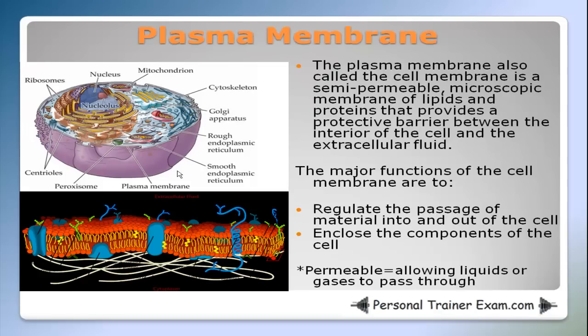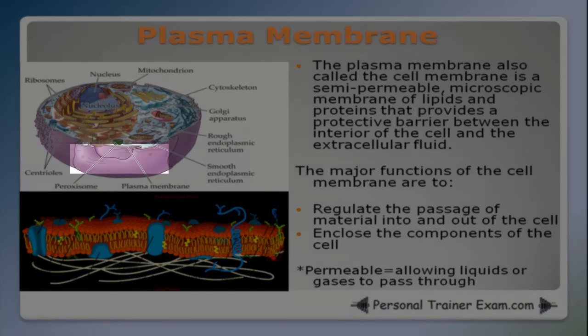A quick review of what the plasma membrane is. The plasma membrane, also called the cell membrane, is a semi-permeable microscopic membrane of lipids and proteins that provides a protective barrier between the interior of the cell and the extracellular fluid. The major functions of the cell membrane are to regulate the passage of material into and out of the cell, and to enclose the components of the cell. The plasma membrane — another name for it is cell membrane — and that's the outer portion of the cell.